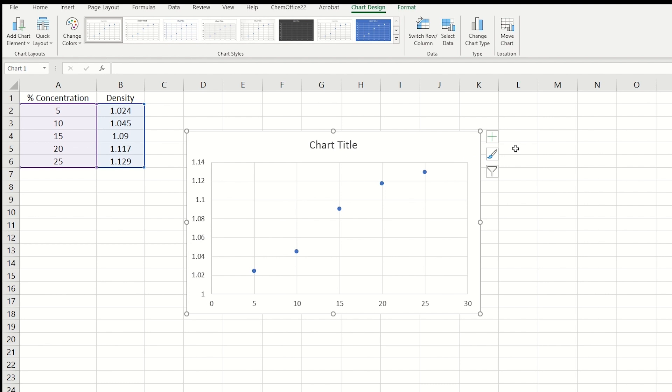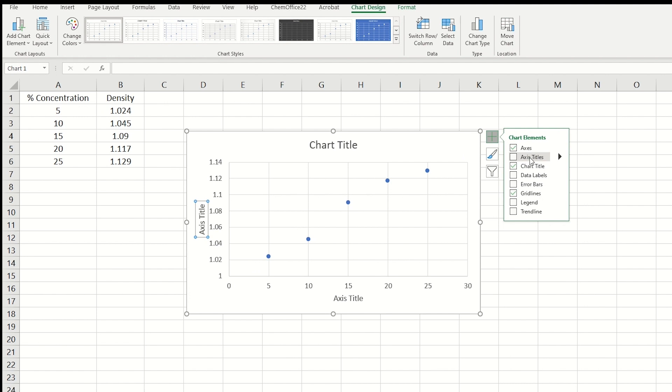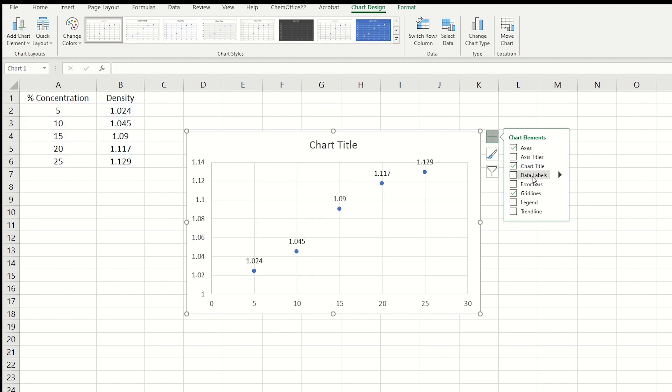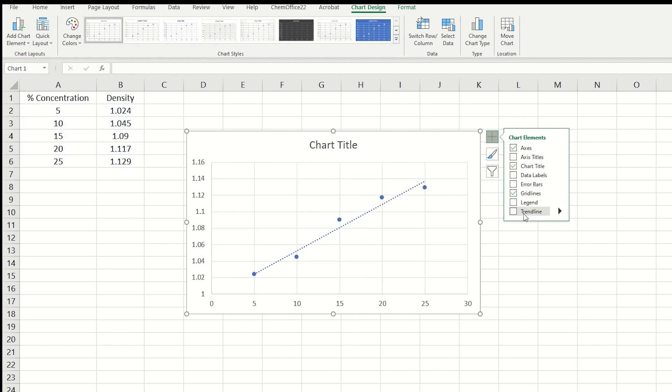You can click the plus icon on the top right corner, and there are several options that appear, adding the axis titles, the chart title, data labels, and trendline. Clicking this box will give you the best fit line of the data.